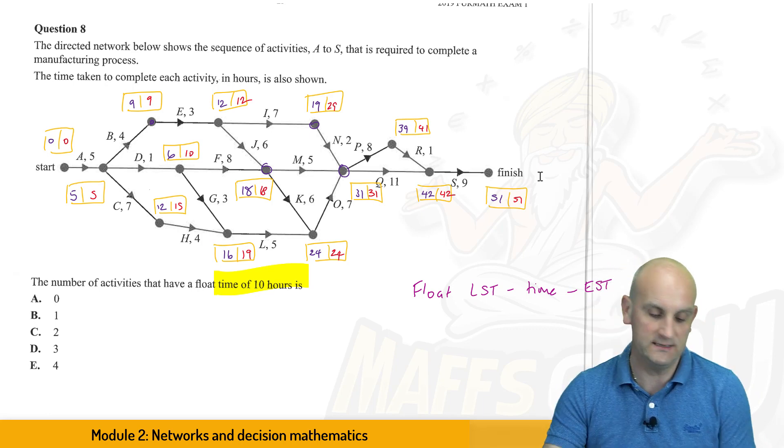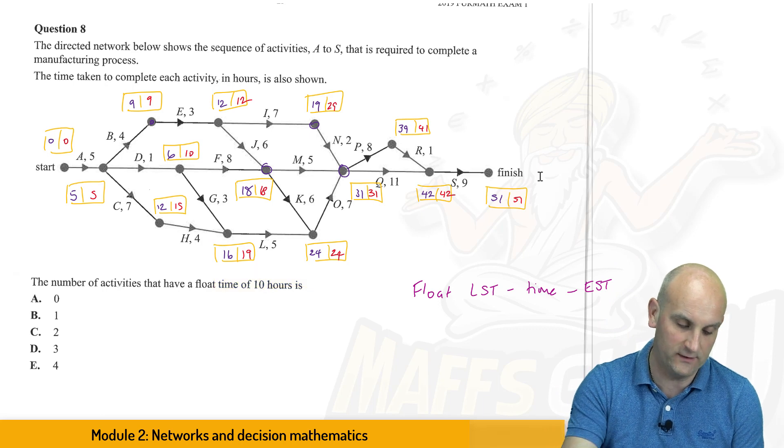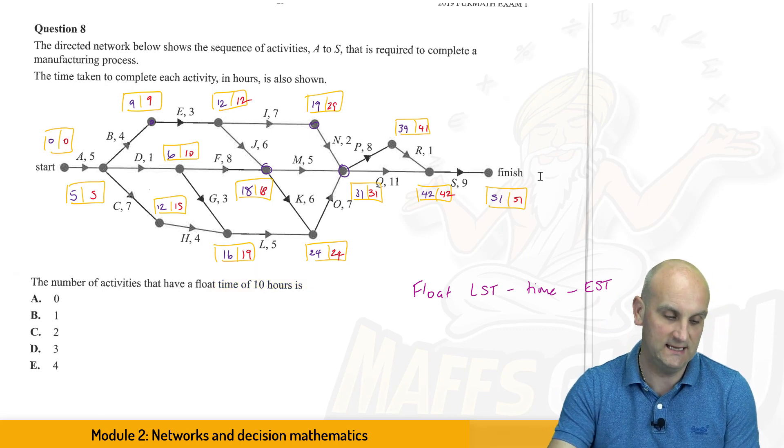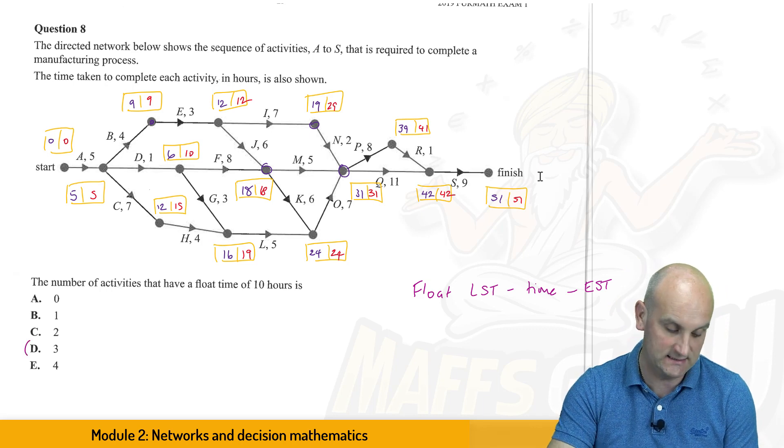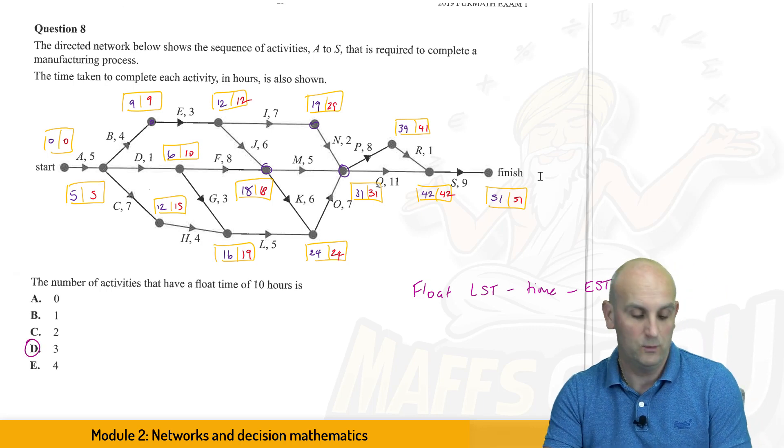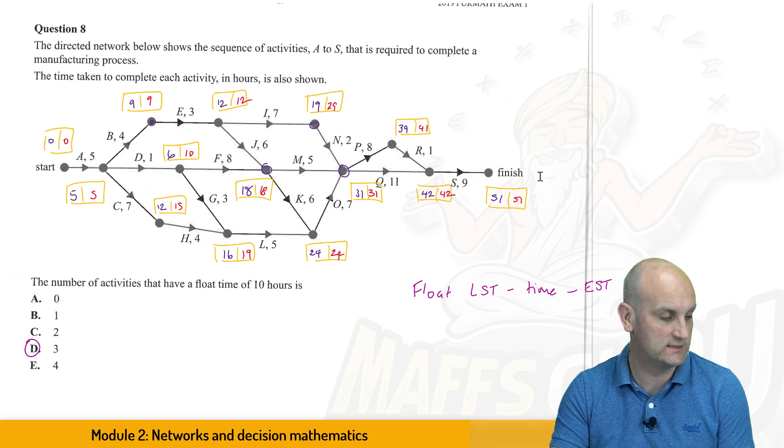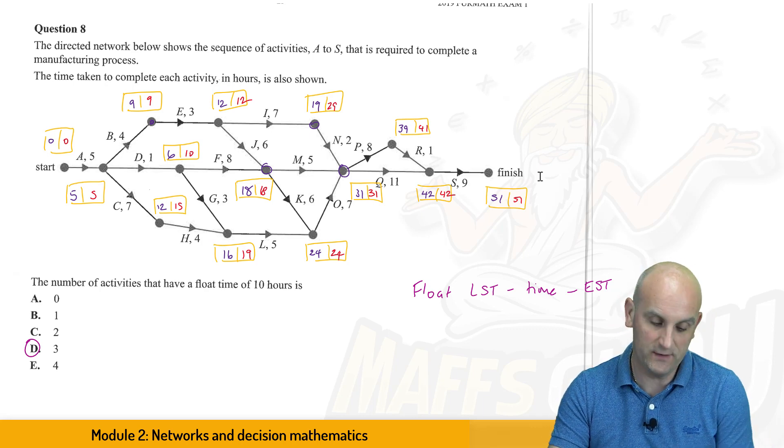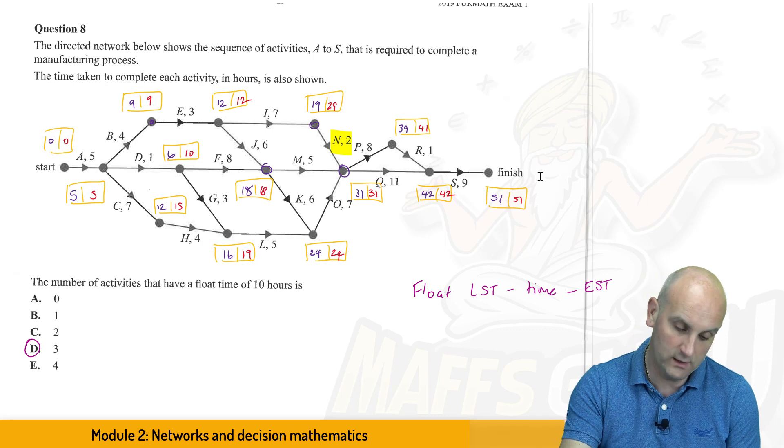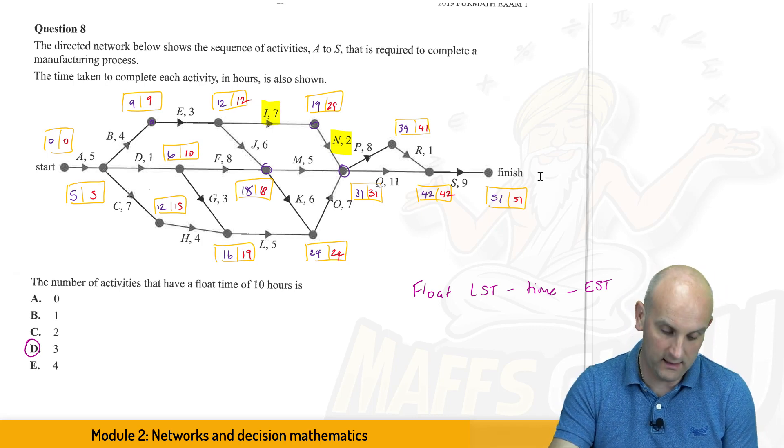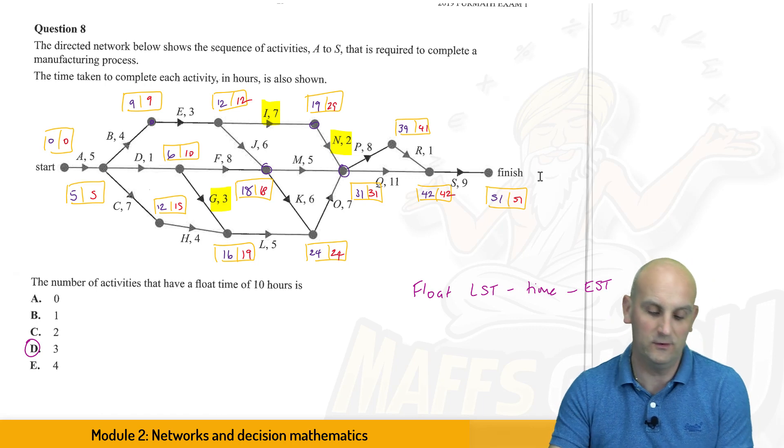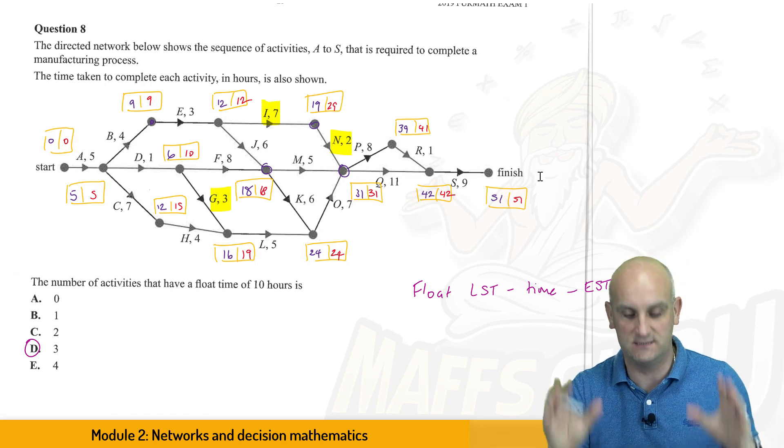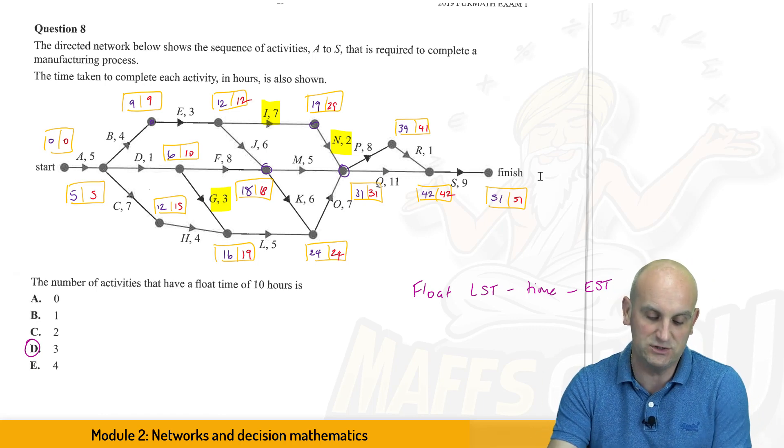Now, what actually turns out is if I take out that floaty thing there, what we notice is there are three of these. And I'm saying my answer now is actually D. There are three with a float time of 10. How do we know which ones they are? Well, first things first, we know that N is one. I'm going to show you why. We know that I is one, and I know that G is one as well. So let's just check the way we know. Now, obviously, nothing on the critical path is going to be a part of this, and so let's just check N.